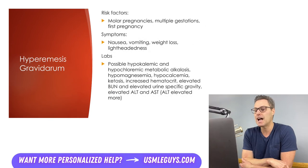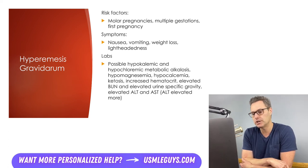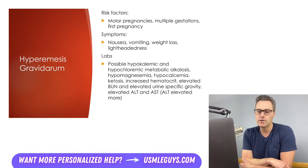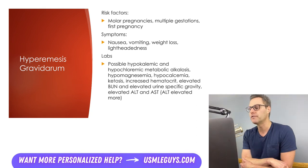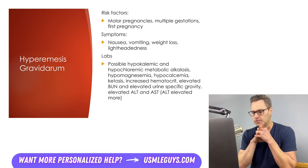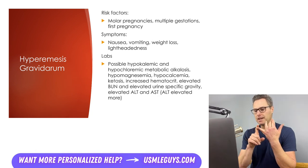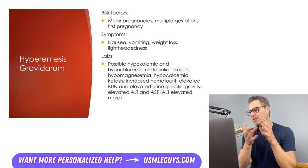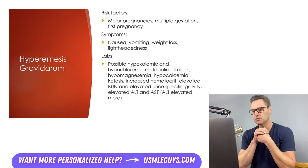The final topic is hyperemesis gravidarum — a condition of pregnancy characterized by severe nausea and vomiting that can be accompanied by weight loss and dehydration, resulting in lightheadedness and other signs of volume depletion. Molar pregnancy is one risk factor, but multiple gestations and first pregnancy are also thought to be risk factors. It's hypothesized that high levels of HCG and estrogen cause hyperemesis gravidarum. Lab abnormalities are due to vomiting, dehydration, and lack of caloric intake: the patient can develop hypokalemic and hypochloremic metabolic alkalosis from vomiting, and ketosis from insufficient caloric intake. They may also have hypomagnesemia and hypocalcemia from insufficient intake.